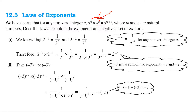2 to the power minus 3 is 1 by 2 to the power 3, and 2 to the power minus 2 is equal to 1 by 2 to the power 2. So in general, a to the power minus m is equal to 1 by a to the power m, and a to the power m is equal to 1 by a to the power minus m.